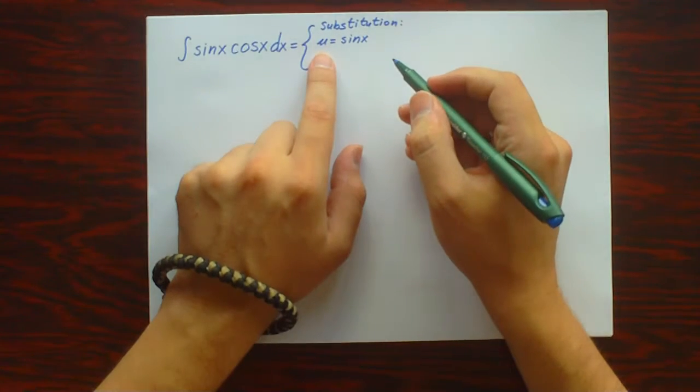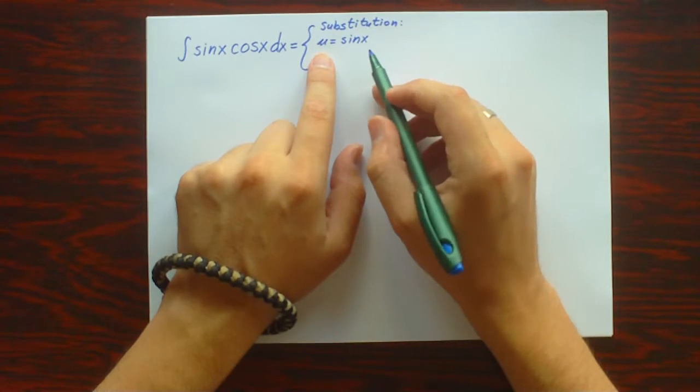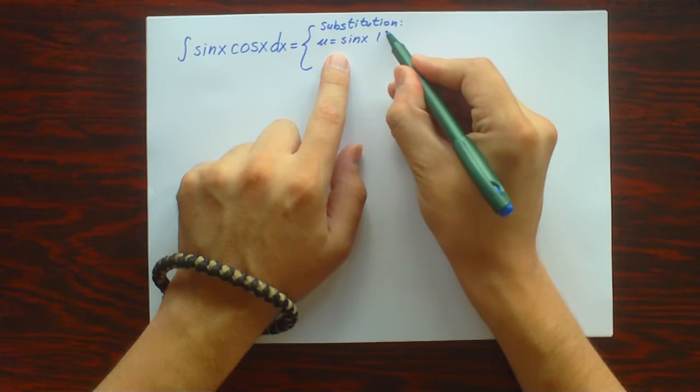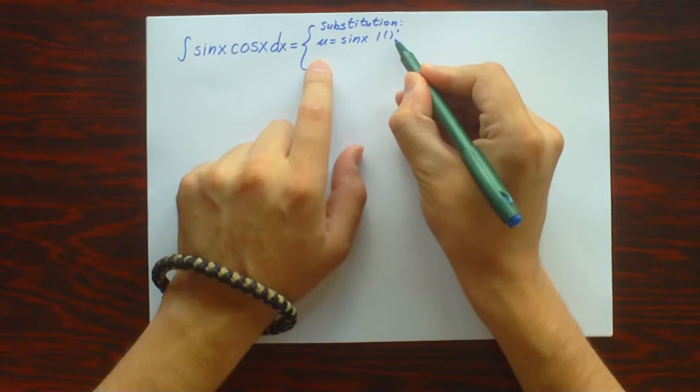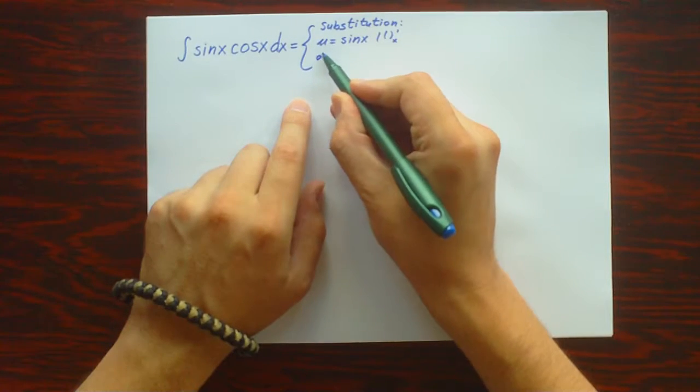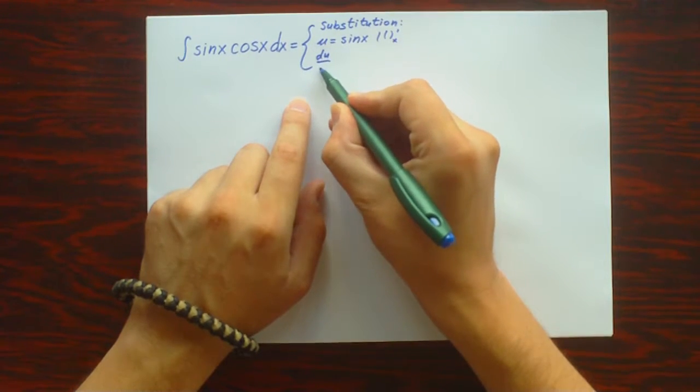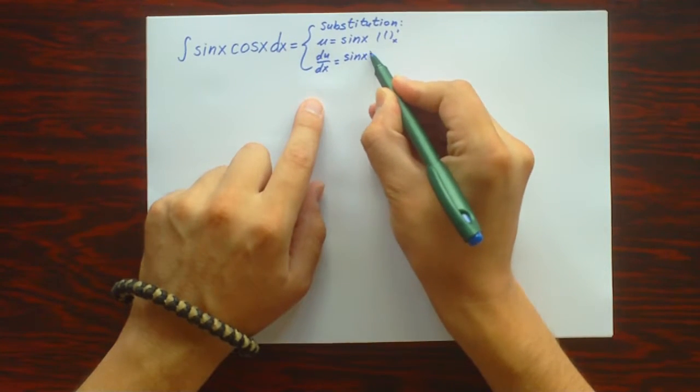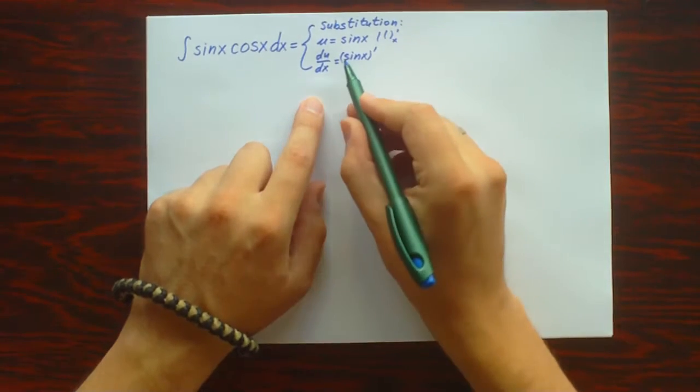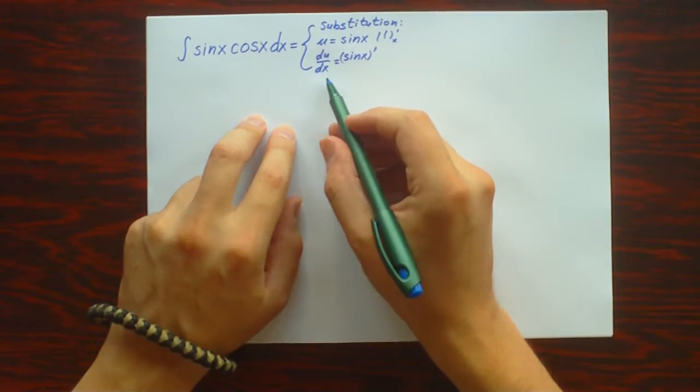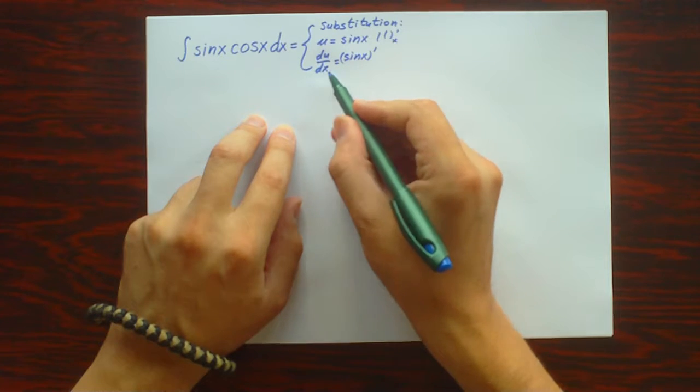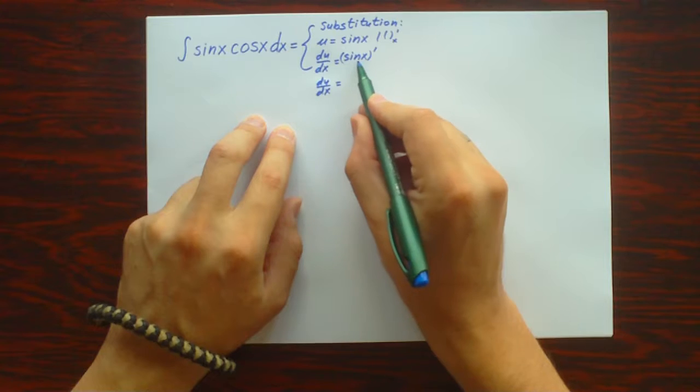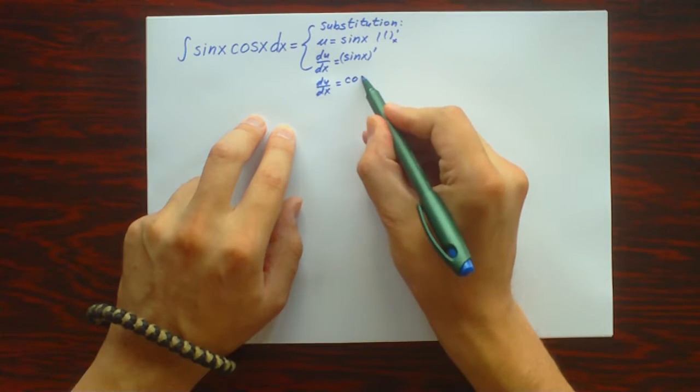Now we're going to derive both sides of this equation with respect to x, and we will get du/dx equals the derivative of sin x. That is du/dx equals cos x, since the derivative of sin x is cos x.